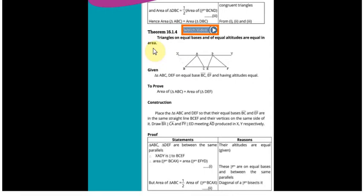Hamare paas do triangles hain jin ki bases equal hongi, that is ABC and DEF, jin mein BC aur EF equal hain aur doosri taraf inke altitudes donon ke ABC aur DEF ki altitudes bhi equal hain.